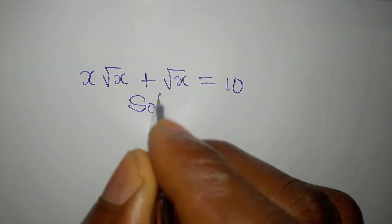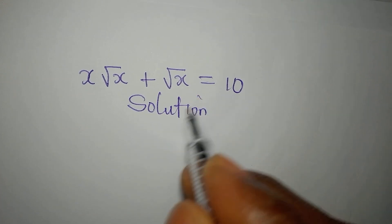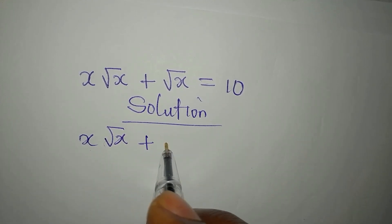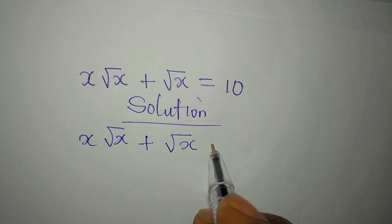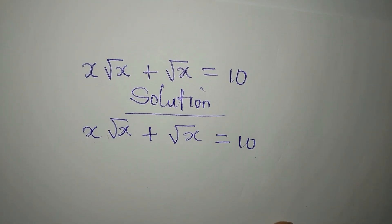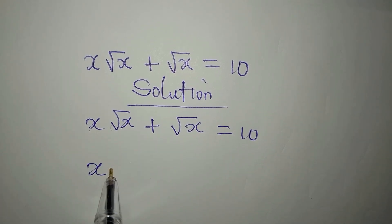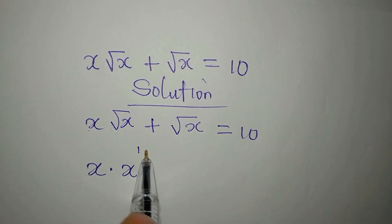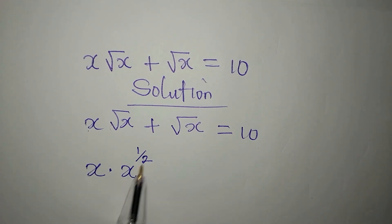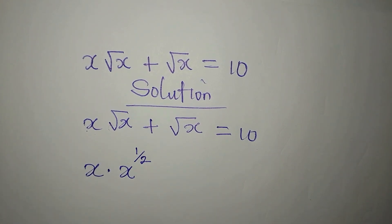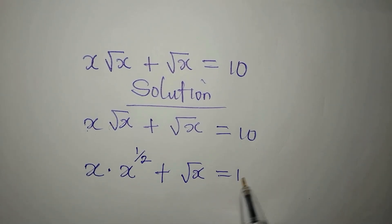Hello everyone, let's provide the solution to this problem: x times square root of x, plus square root of x, equals 10. We have x multiplied by x to the power of 1 over 2, because x to the power of 1 over 2 is the same thing as square root of x, then plus square root of x, and everything is equal to 10.